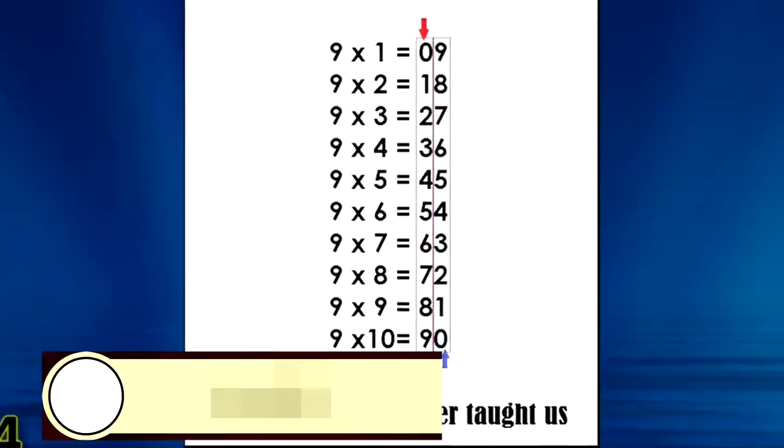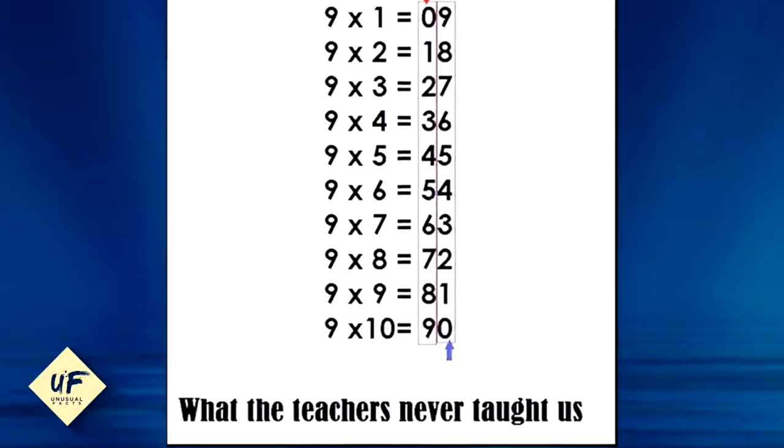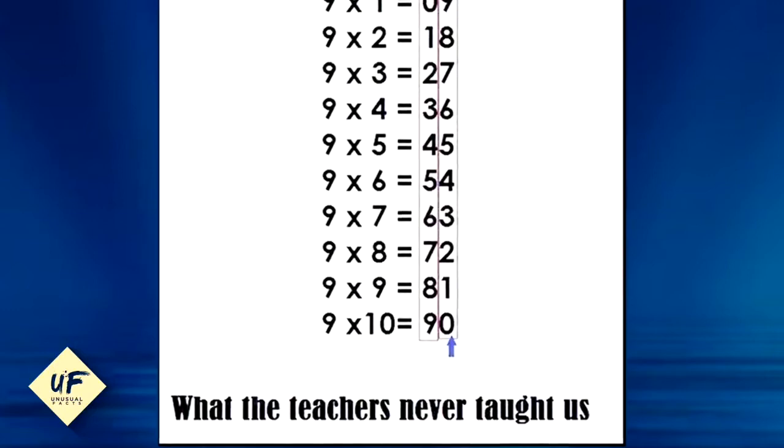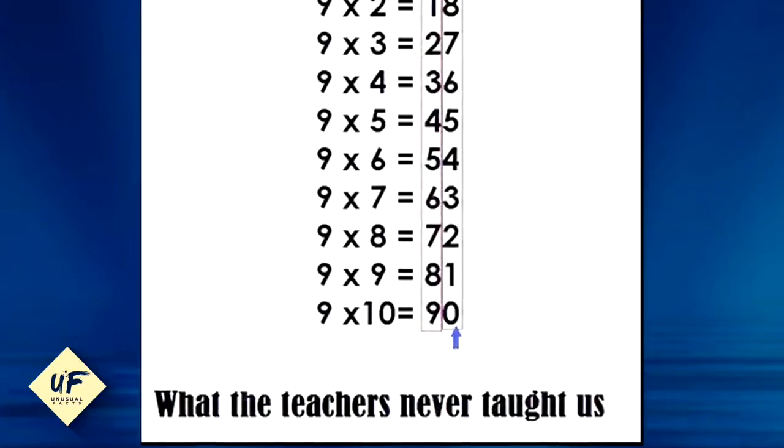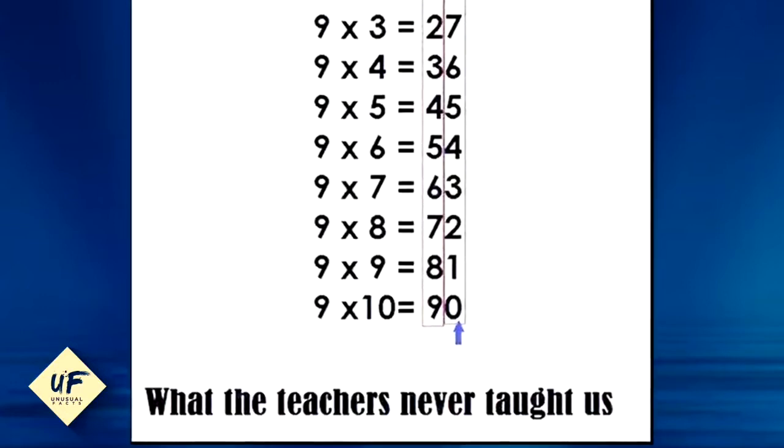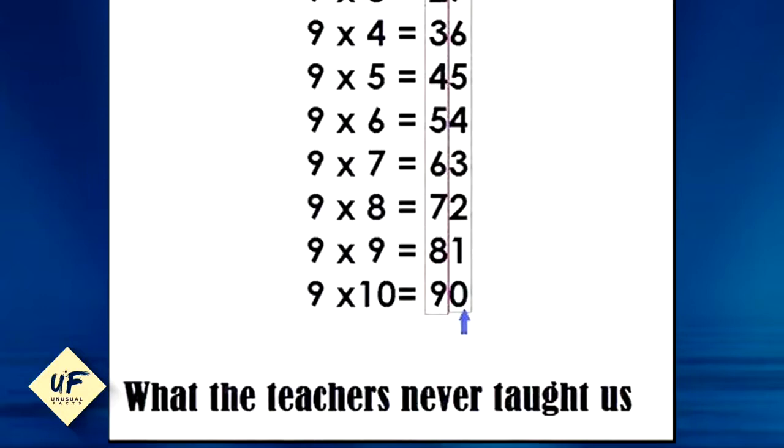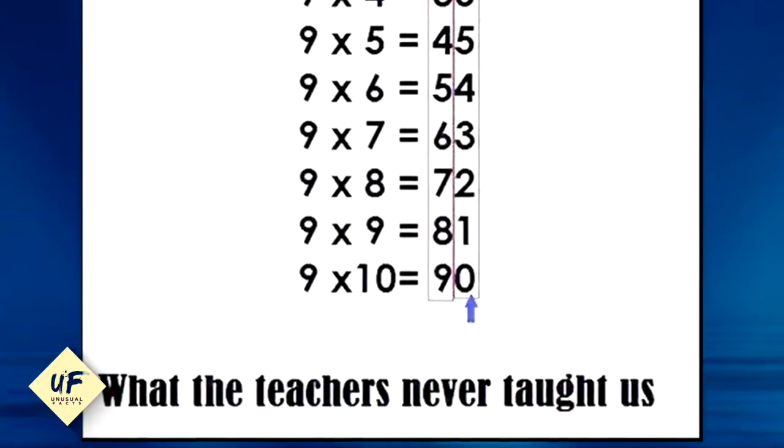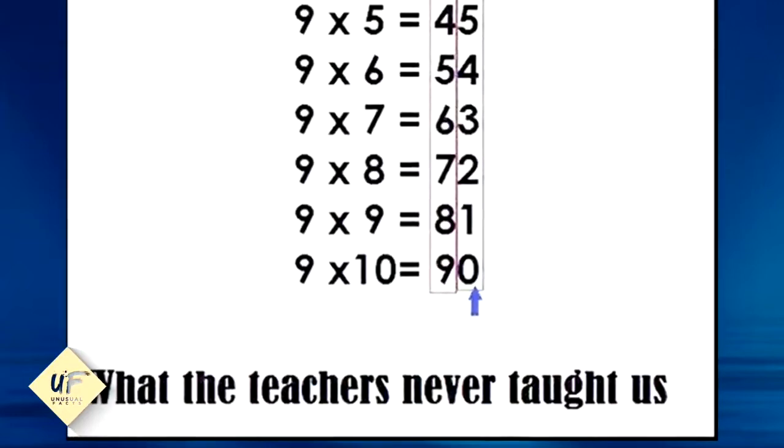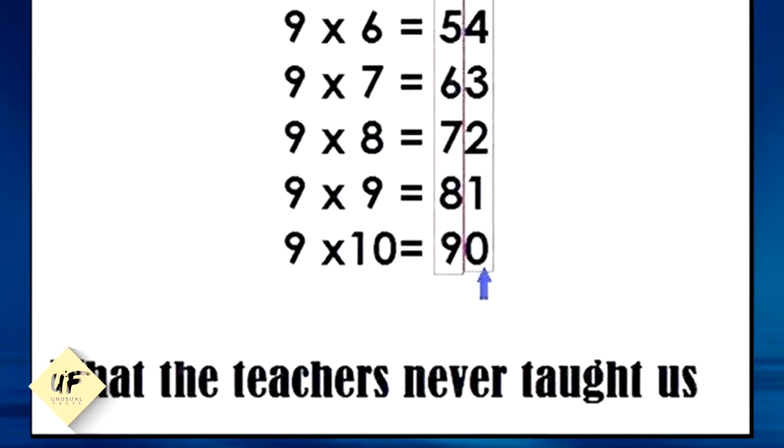Number four: you can easily remember multiples of nine. Nine times one is nine, nine times two is 18, nine times three is 27. Do you see the pattern here? Zero, one, two, three, four, five, six, seven, eight, nine, and nine, eight, seven, six, five, four, three, two, one, zero. This is something that teachers never taught us.